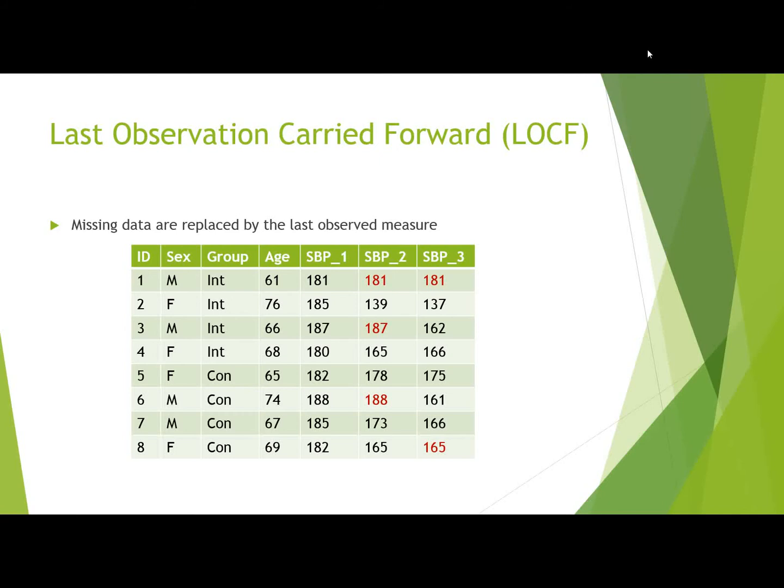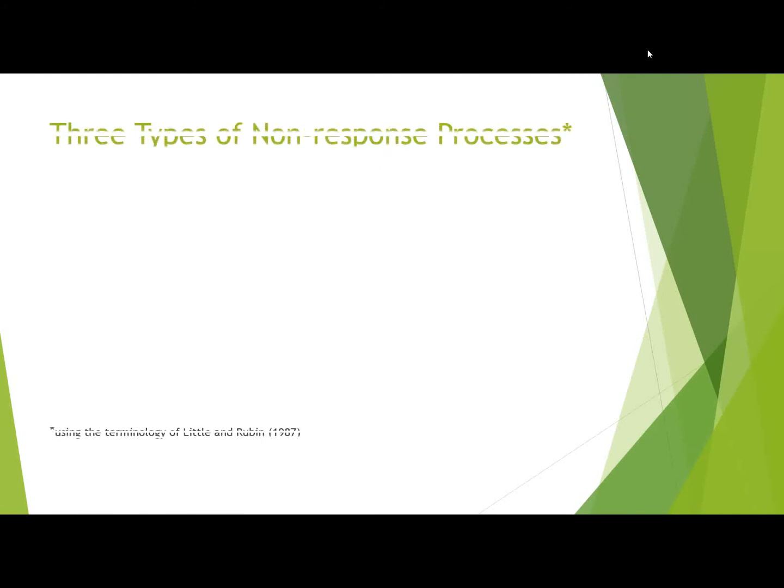Where is the problem? What does this do if we change our data that way? We have to think about the process that lies behind the missing data, because there is a process behind it. There are three types of non-response processes, and we follow the terminology of Little and Rubin.